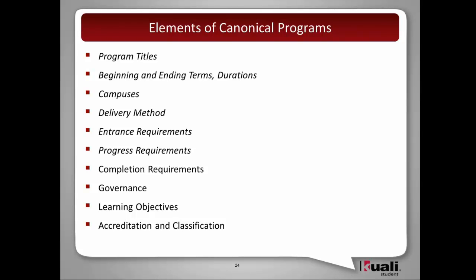On the canonical program attributes slide, items in italics are those which may be changed at the offering level — which we're about to get into. Some things like completion requirements typically do not change at the offering level, nor do governance, learning objectives, or any form of accreditation or classification of the program.